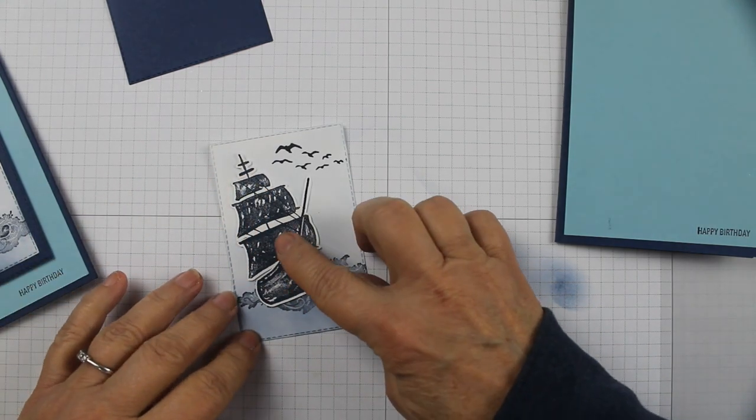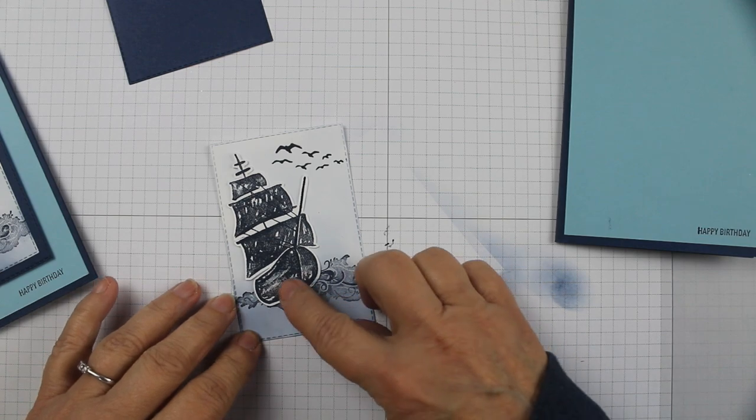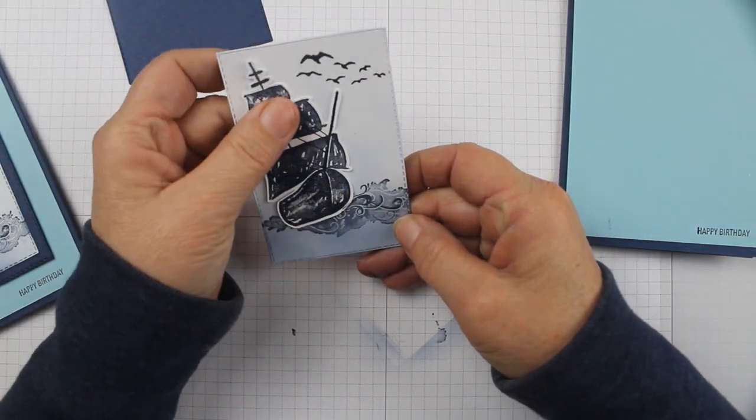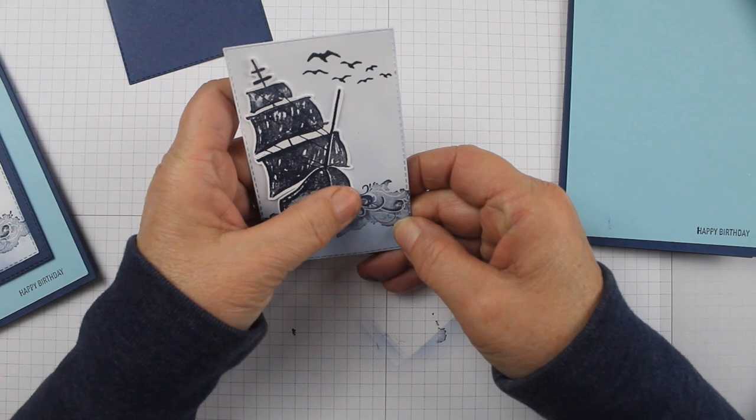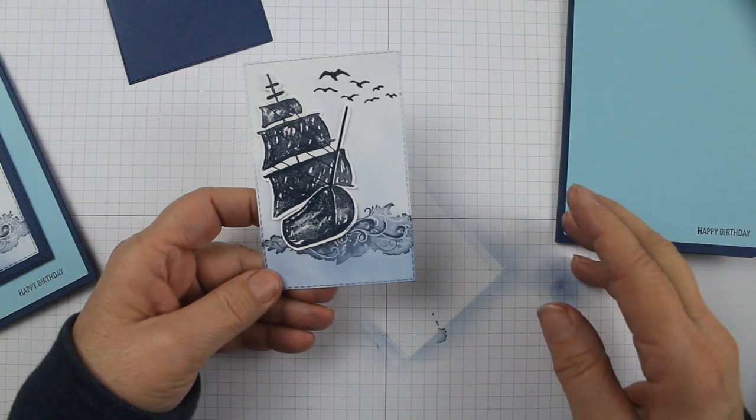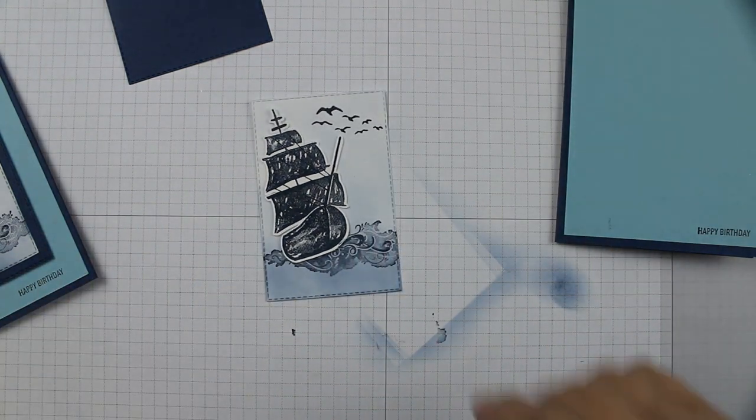And then glue it down to your card piece. Then you can kind of move it - when you have the glue you can kind of move it, put it where you want it. Because I want it to kind of be going up like that, like it's going up on the wave, right? I love it.